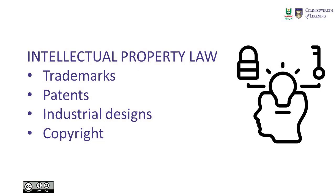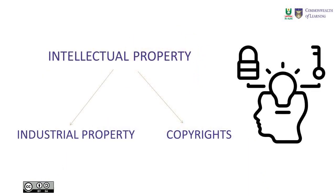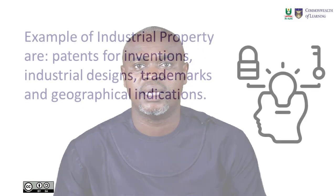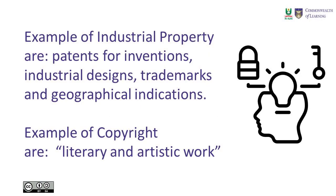There are several intellectual property laws, which include trademark, patents, industrial designs, and of course copyrights. Intellectual property can be divided into two branches: industrial property and copyrights. Examples of industrial property are patents for inventions, industrial designs, trademarks, and geographical indications. Examples of copyrights are literary and artistic works.